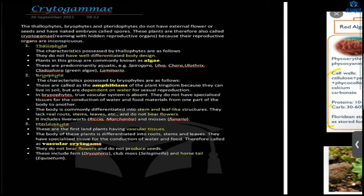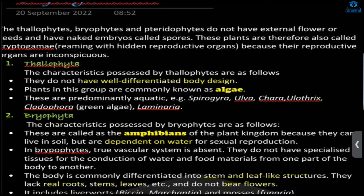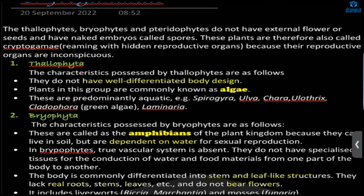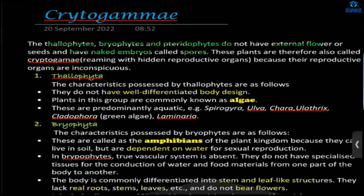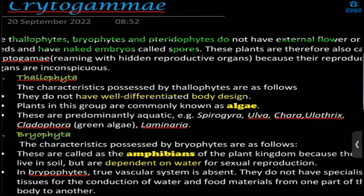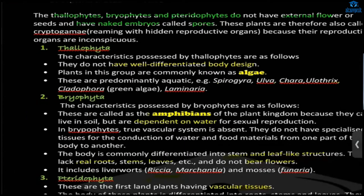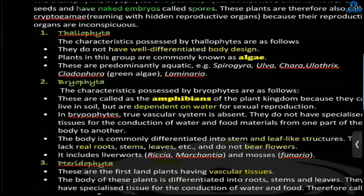This group of plants — Thallophyta, Bryophyta, and Pteridophyta — they do not have external flowers or seeds, and they have naked embryos called spores. That is why they are called cryptogams, because their reproductive organs are hidden.